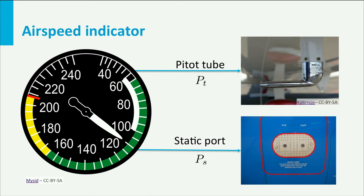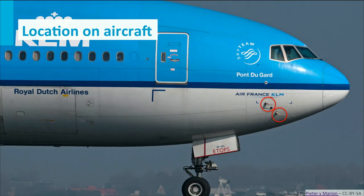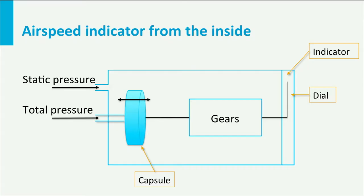These two ports are carefully positioned on the airframe in order to provide the correct measurement. Schematically, an airspeed indicator looks like this. On the inside there is a sealed chamber, which is connected to the static pressure port. The total pressure is connected to a capsule which expands as a function of the internal pressure, the total pressure, and the external pressure, the static pressure. The pressure difference is a measure for the airspeed and is provided to the dial through a set of gears.